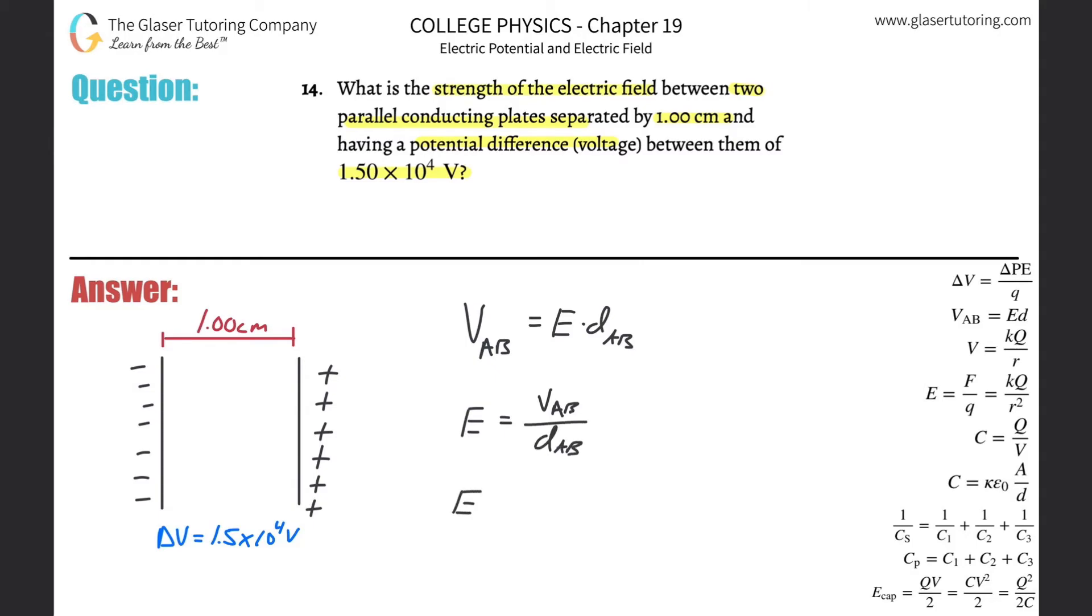So this is very simple now. The voltage here they told us is 1.5 times 10 to the 4th. The distance between them in centimeters they gave it to us, but you know we need that in meters, so just do that quick conversion. And voila, all we need to do is calculate, so it's 1.5 times 10 to the 6th.